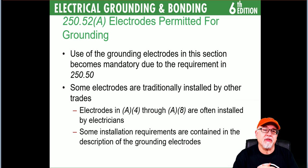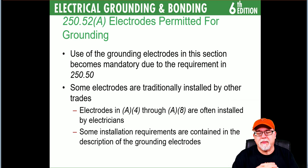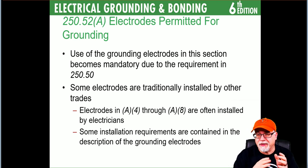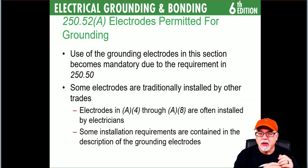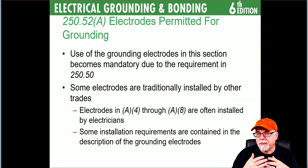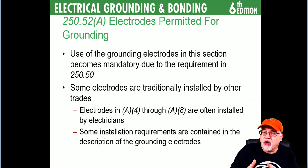If it's a concrete encased electrode or in-ground steel, you're essentially done — you don't have to do anything else. Sometimes plans will call for supplementing those, but you don't have to. Those three are usually inherent to construction. Whereas A4 through A8 are typically ones the electrician will have to install if the others aren't present.